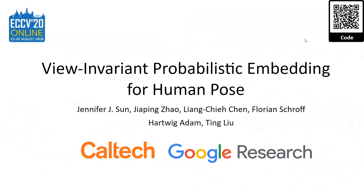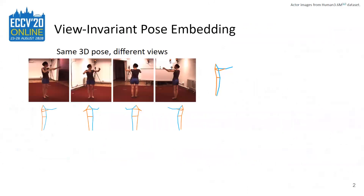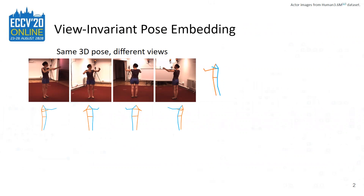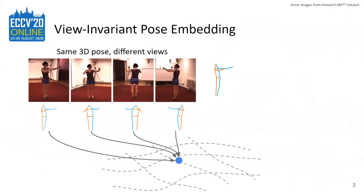Hello, my name is Jennifer and I will be talking about View-Invariant Probabilistic Embedding for Human Pose. These images depict a person's pose from four different angles. There is significant appearance variation across camera views, and we see that the same 3D key points project to very different 2D key points in different views. View-invariant representation of 2D key points is helpful for a variety of vision tasks, such as pose-based image retrieval and video alignment across views.